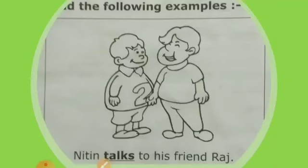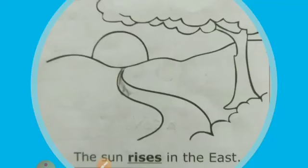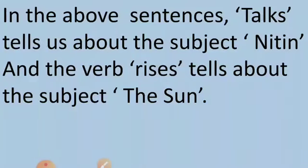In the first sentence, the word 'talks', and in the second sentence, the word 'rises' — these words are showing the action in the sentence. In the above sentences, 'talks' tells us about the subject Nitin, and 'rises' tells about the subject, the sun. They are telling us about the action done by the subject in the sentences.